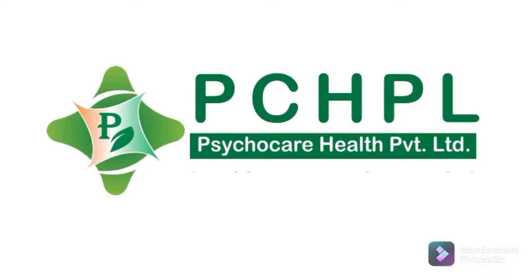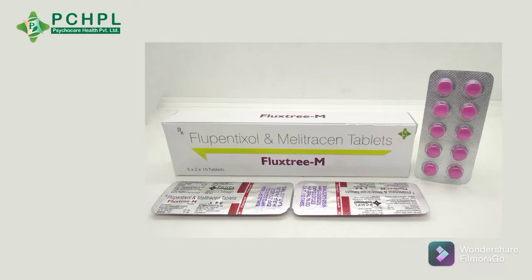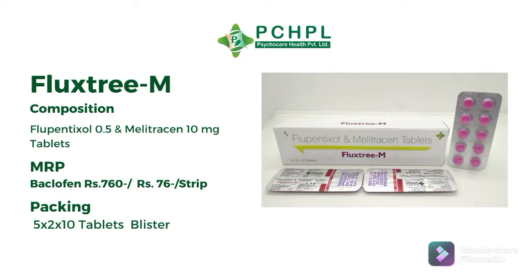Hello everyone, today we will discuss about Fluxtree M. It contains Flupentixol 0.5 mg and Melitrazine 10 mg. It comes in 5x2x10 blister packing and its MRP is 76 per strip.